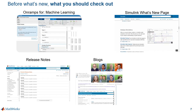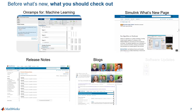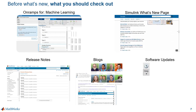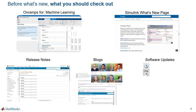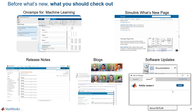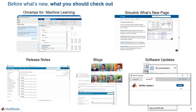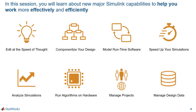Another great way to learn about new capabilities and workflows is through our blogs. You can also get new software updates directly from the product — just go to the MATLAB tool strip, click the help drop-down, check for updates, and you can get your software updates directly from MATLAB. Now let's learn about new capabilities that will help you work more effectively and efficiently with Simulink. See you in the next video.